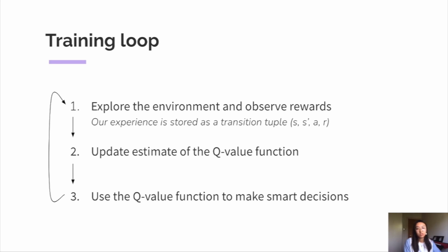which is a tuple containing our current state, the action we take, our state after taking the action, and the reward we receive. And next, we use our experience to improve our estimate of the environment's Q-value function.